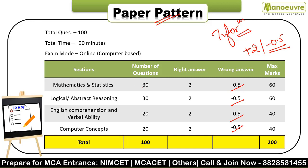Mathematics and Statistics: 30 questions. Logical and Abstract Reasoning: 30 questions. English Comprehension and Verbal Ability: 20 questions. Computer Concepts: 20 questions. You can achieve maximum score in Computer Concepts, English, and Logical Reasoning. Maths is also important. The marking system is +2 and -0.5, and maximum marks are 200.